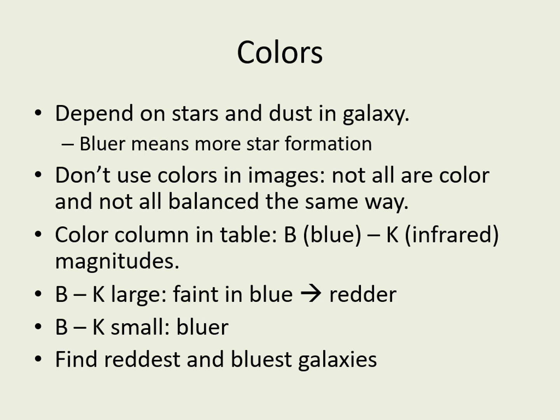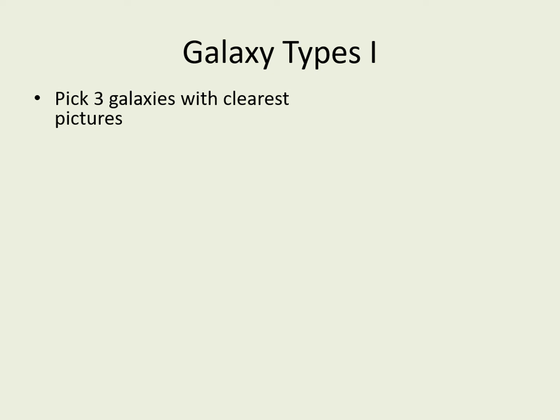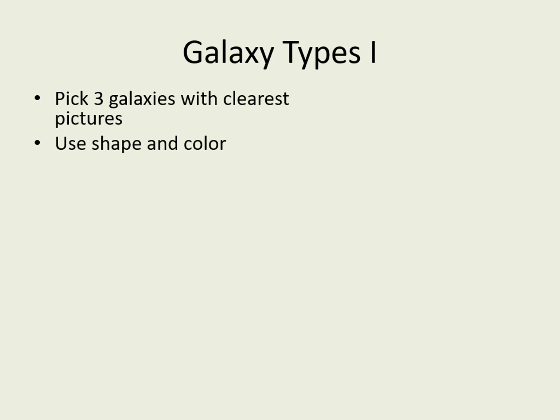You should pick the galaxies that have the largest and smallest B minus K colors to be the reddest and bluest galaxies in your constellation. Make sure you describe how you can tell this in your answer. You're welcome to pick any three galaxies in your constellation to classify — I recommend picking the three that have the clearest pictures to make your job easier. There are two pieces of information you'll use to find the galaxy type: the shape of the galaxy and the color. Remember that you should focus on the color from the table, not the picture, since the picture colors can be misleading.